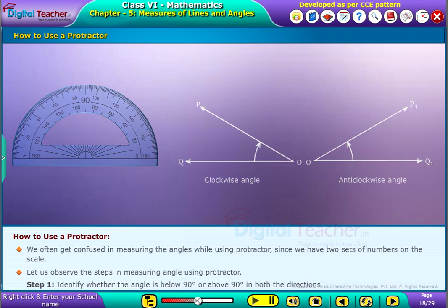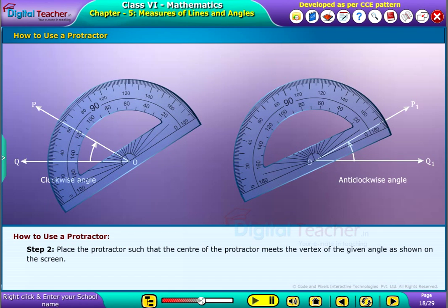Step 2: Place the protractor such that the center of the protractor meets the vertex of the given angle as shown on the screen.